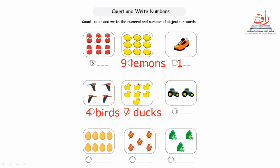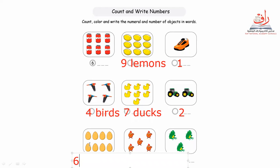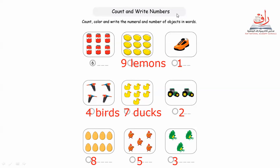We have a truck — two trucks. Let's go next. What's this? Mango! Let's count: one, two, three, four, five, six, seven, eight — write number eight. What do we have here? Chicken: one, two, three, four, five — write number five. What about a frog? One, two, three — three frogs. For this page, write the numbers and the names: lemons, birds, ducks.